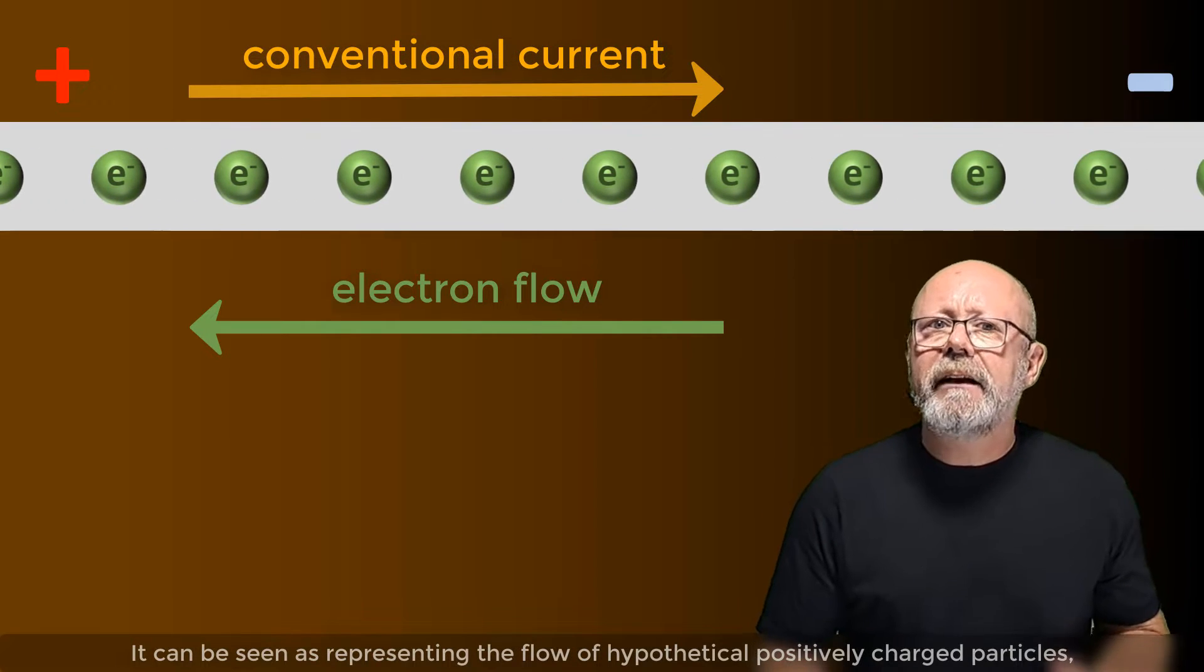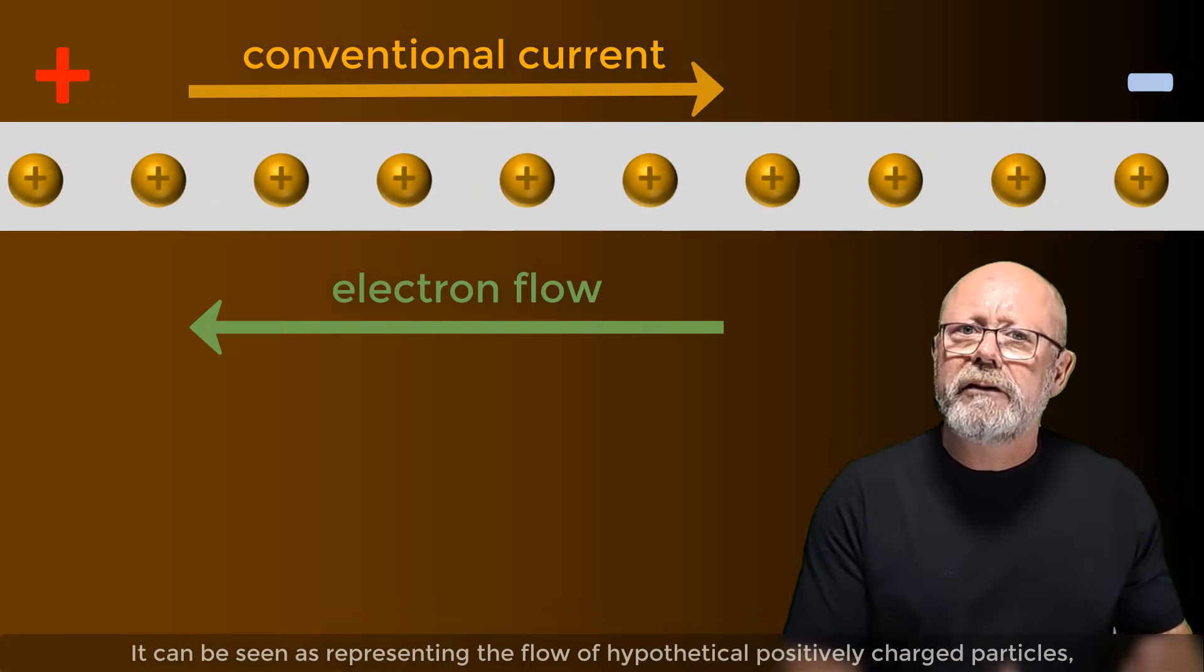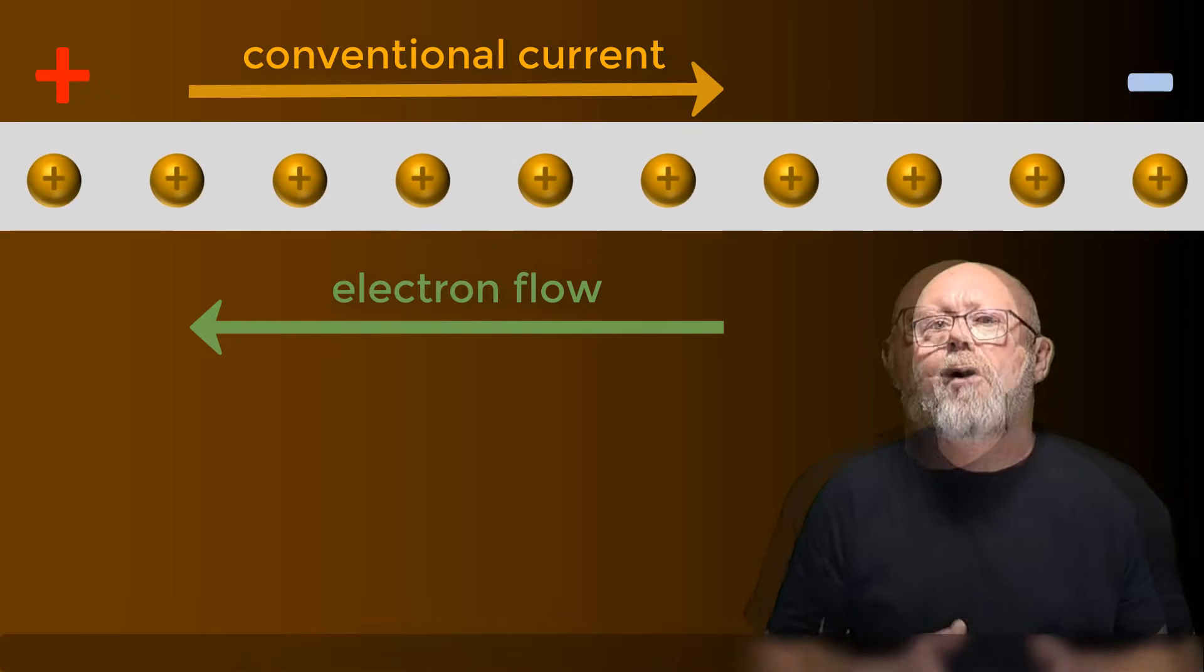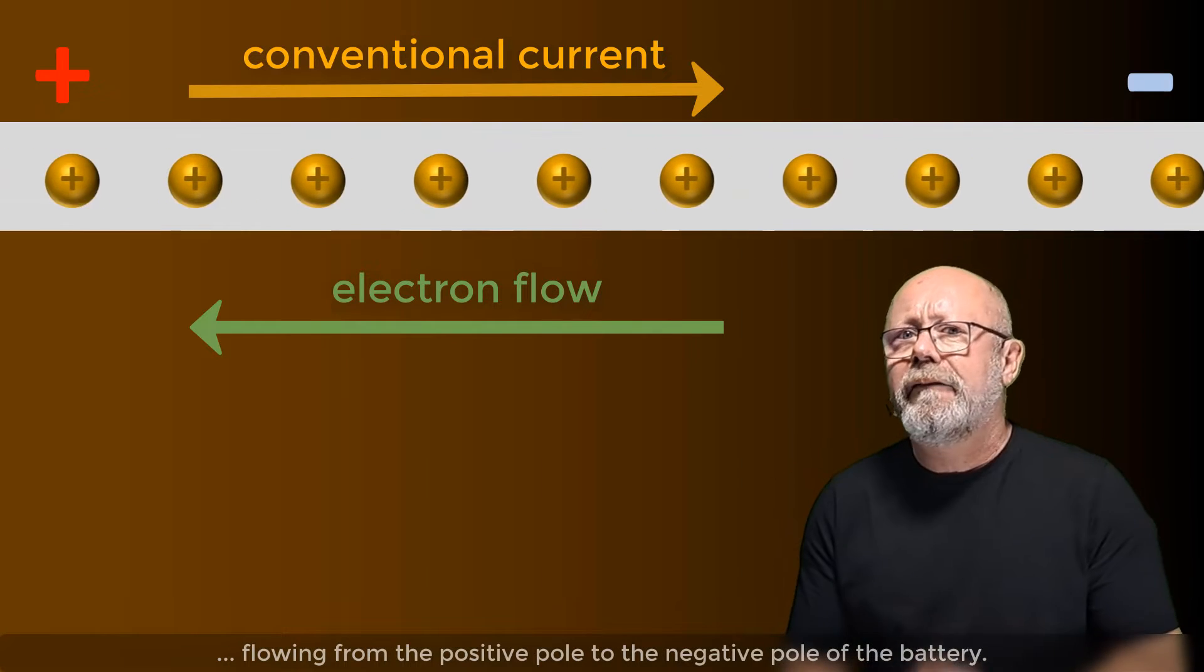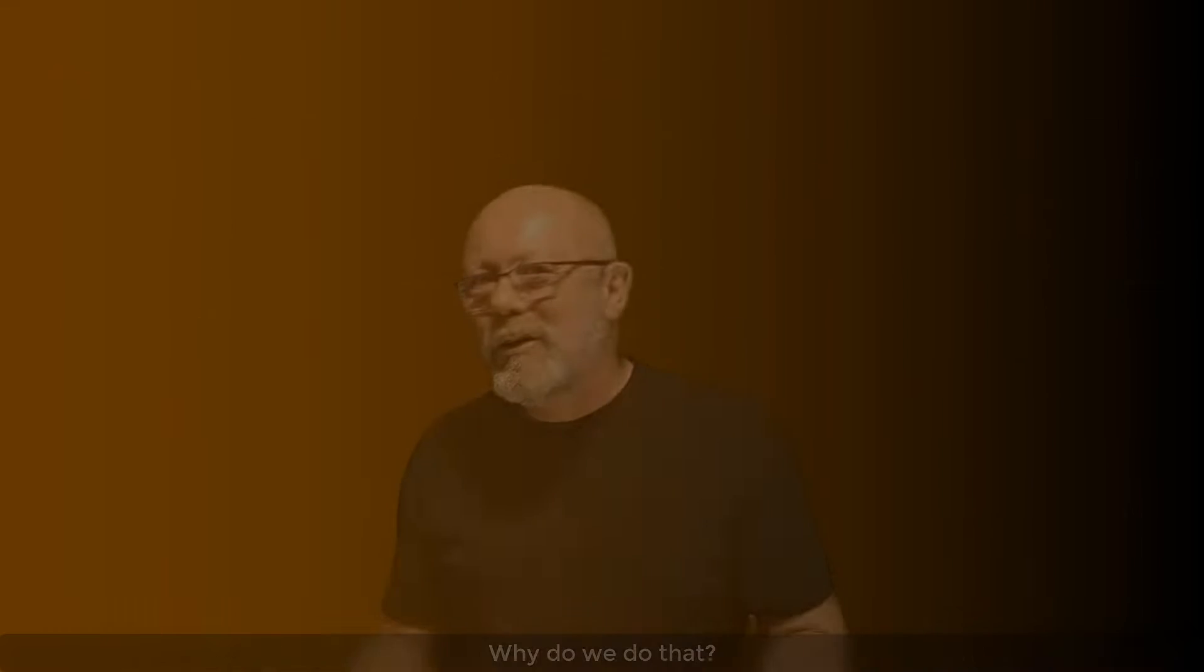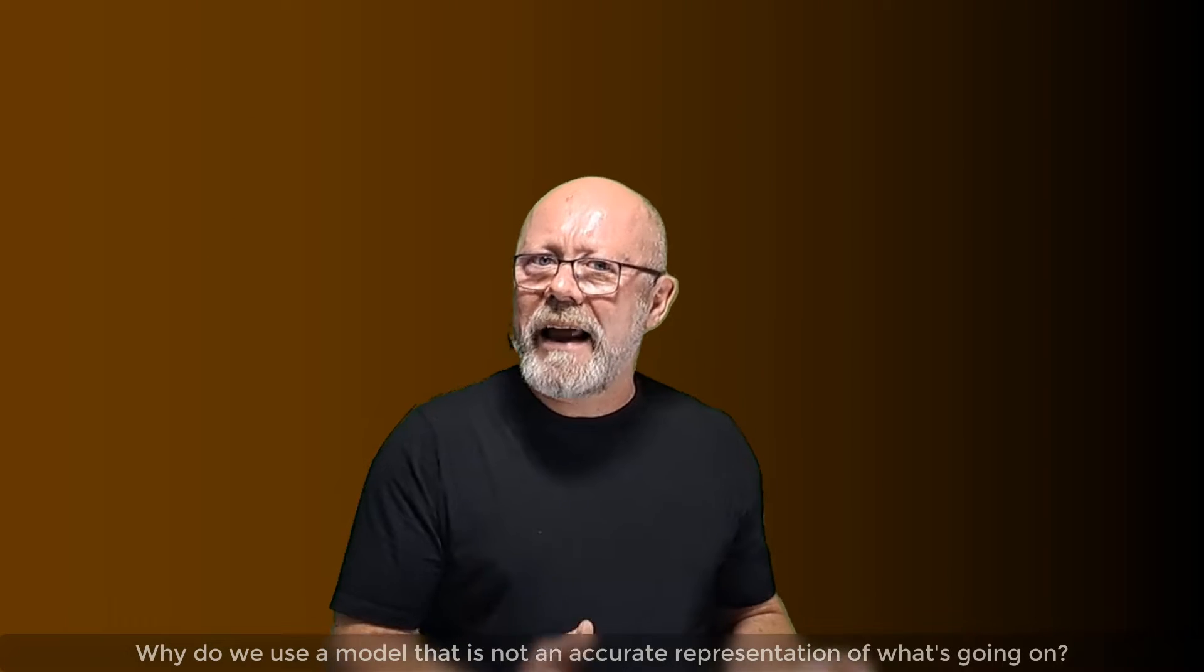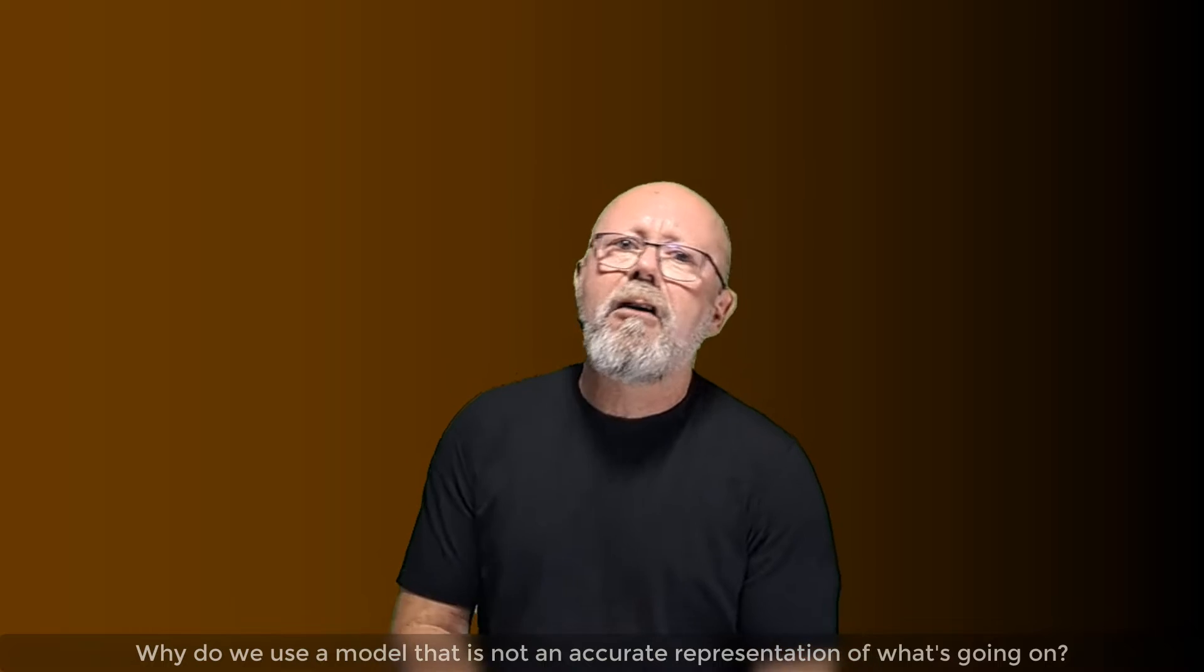It can be seen as representing the flow of hypothetical positively charged particles flowing from the positive pole to the negative pole of the battery. Why do we do that? Why do we use a model that is not an accurate representation of what's going on?